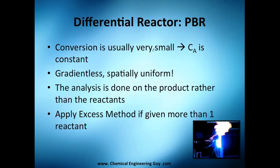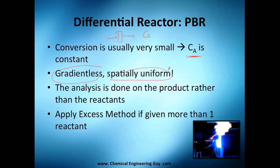The conversion will usually be very small because our reactors are very small, so we can say the concentration of A is constant. In practice you may consider it constant — that's very important because it plays a huge part in our model. The reactor is also gradientless and especially uniform in radius. Importantly, the analysis is done on the product rather than the reactants — this is the first time reactants will not be analyzed.